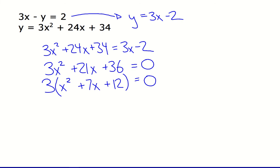And luckily enough for us, there are two numbers that multiply to 12 that add up to 7, and that would be 4 and 3. So I get 3 times x plus 4 times x plus 3 would equal 0. By the 0 product property, 3 does not equal 0, so I'm not concerned with that.